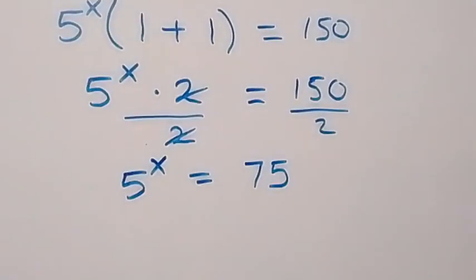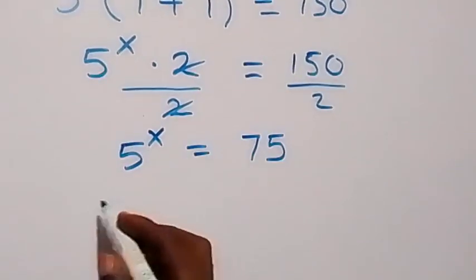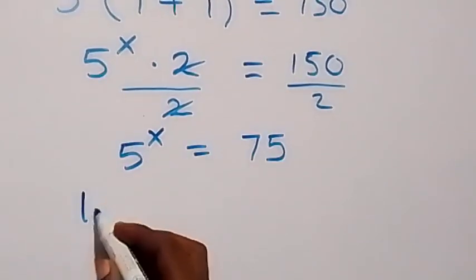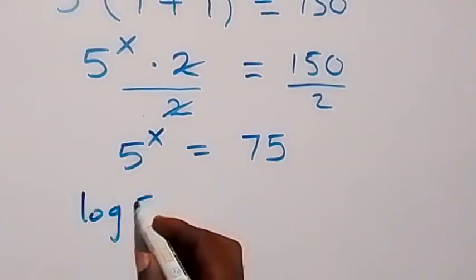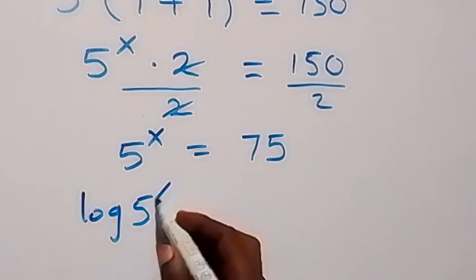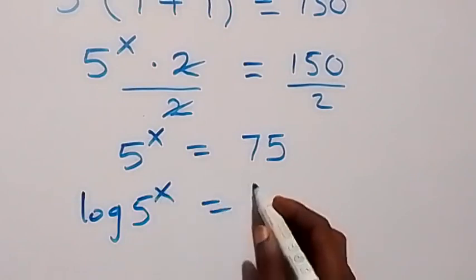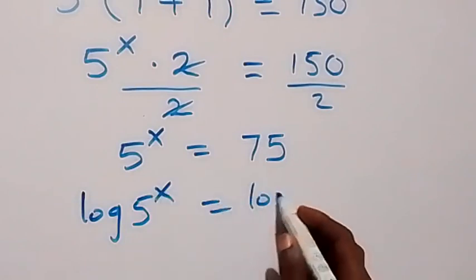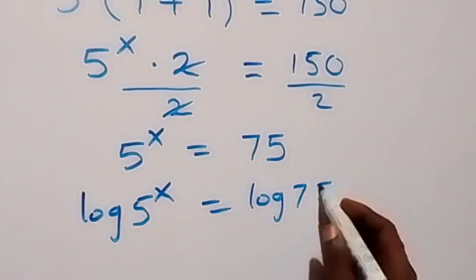Then let's take the log on both sides. We have log of 5 raised to power x equals to log 75 on this side.